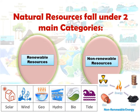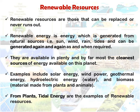Natural resources fall under two main categories: renewable resources and non-renewable resources. Under renewable resources: solar energy, wind energy, geothermal energy, hydro energy, bio energy, and tidal energy. Under non-renewable resources: coal energy, gas energy, nuclear energy, and oil energy. Water exists in three forms — solid, liquid, and gas.